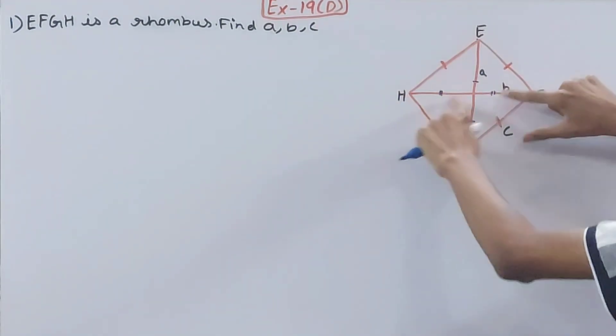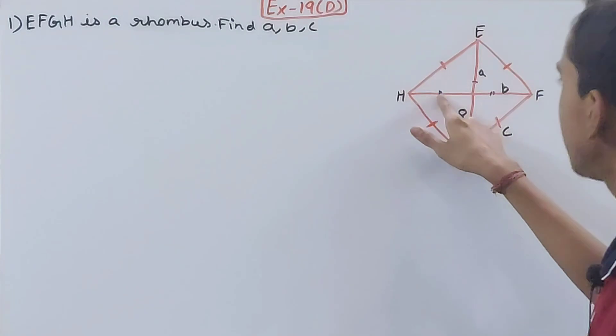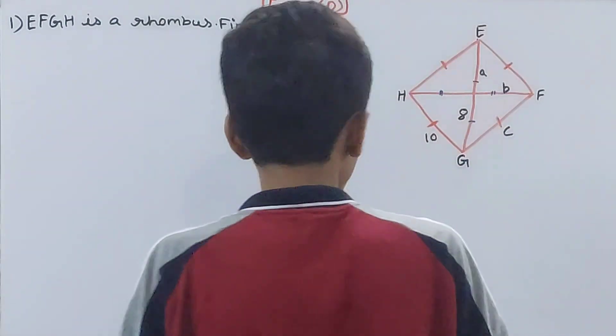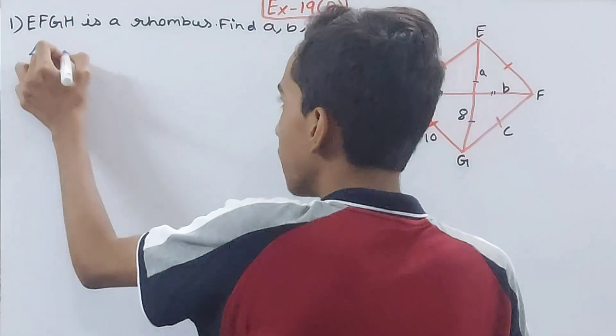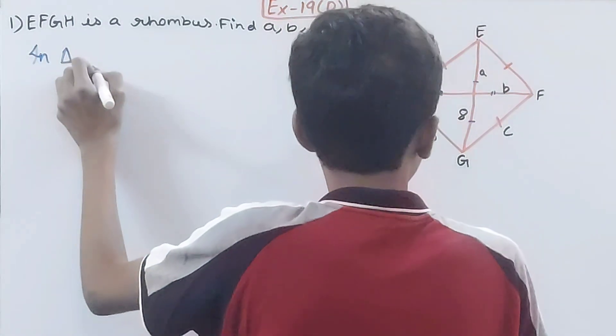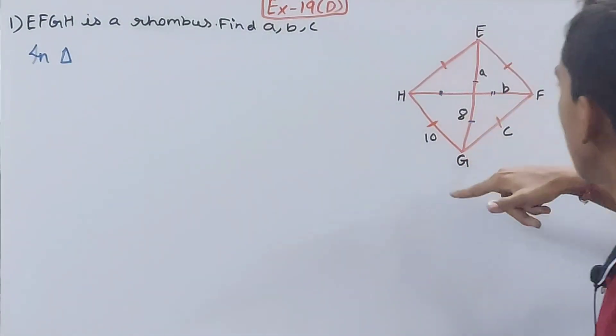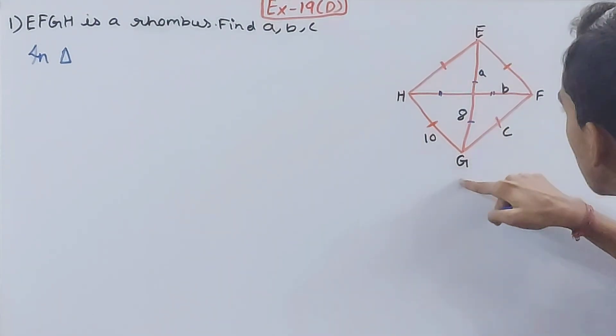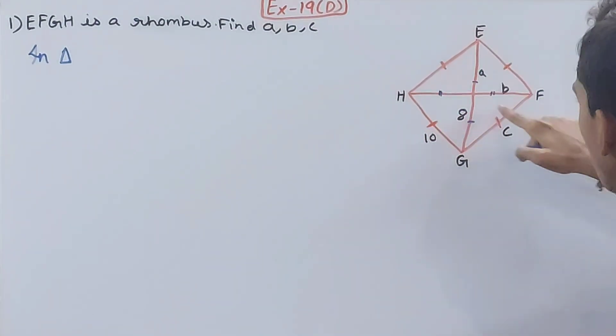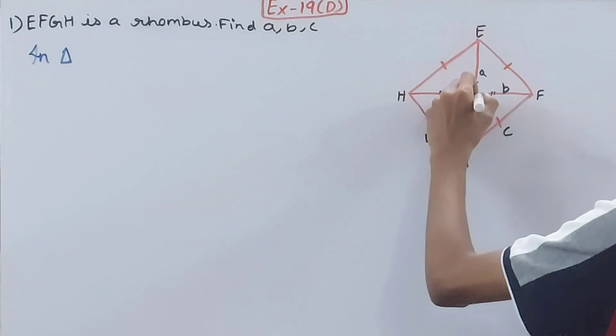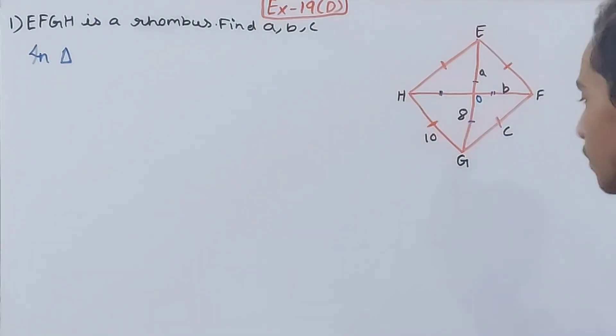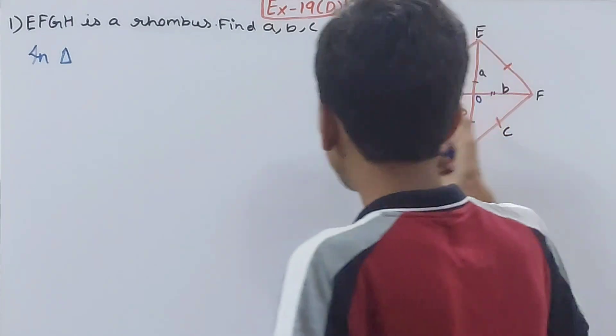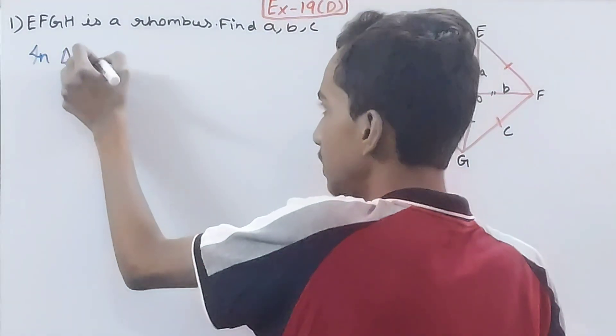Here, if we have to find b, I need to know this side which I don't know, so first let's calculate this. Which triangle should we pick up? We can name this point here, let's say O. So we can go G, O, and H. In triangle GOH.